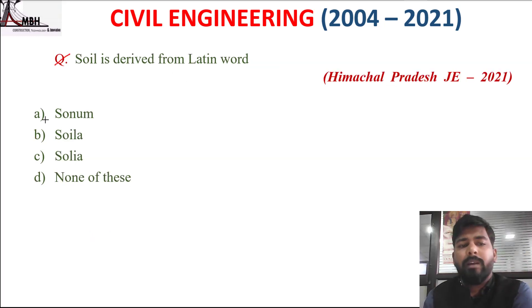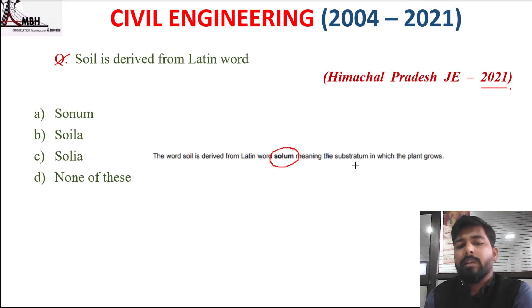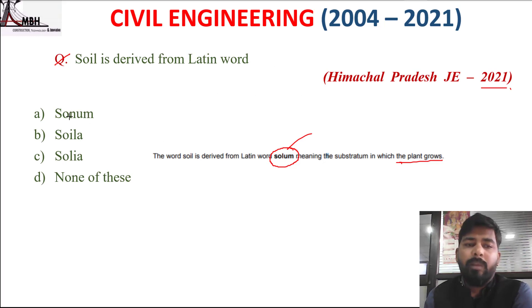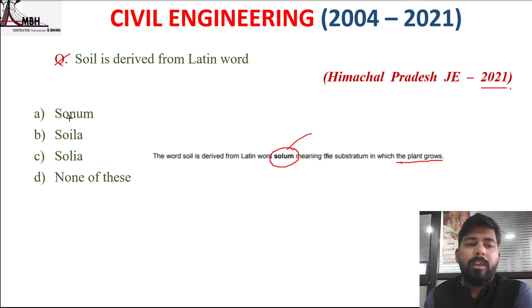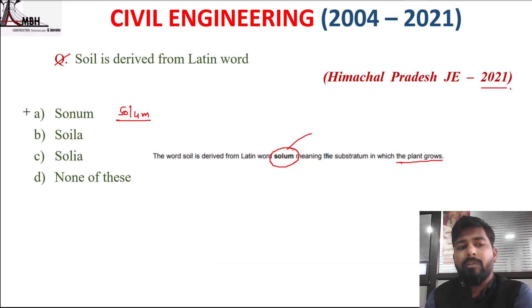Next question: the word 'soil' is derived from the Latin word. The word soil comes from the Latin word 'solum' (S-O-L-U-M), meaning the substrate or layer in which plants grow. The correct option is Option A.